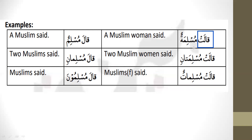The number doesn't have to match, but the gender should match. If it's hia, then the outside doer will also be feminine. If it's hua, then the outside doer will also be masculine — hua is masculine. Like qala muslimun: qala is hua form, and muslimun is also masculine. Qala muslimun means 'a Muslim said.'